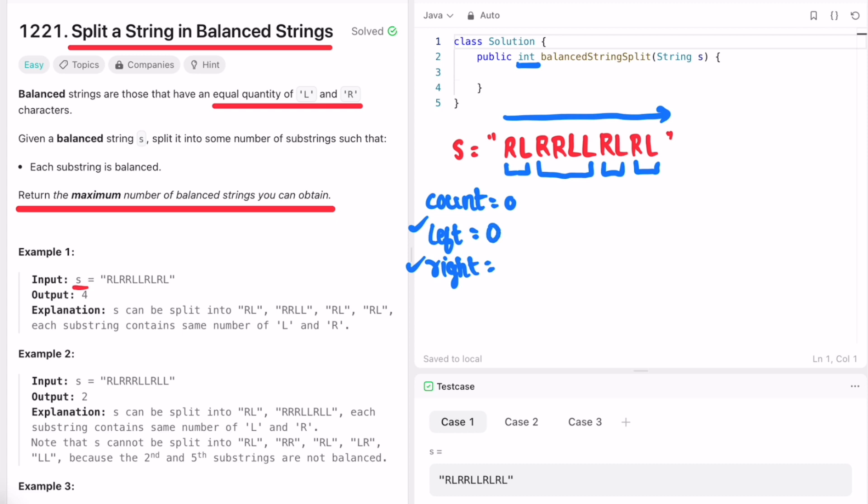So let's start our iteration from here. Keep track, whenever this condition satisfies we increment the count variable. So we are here, R, so increment right. Now we go for the next element, we are here, L, so increment left. This condition is passing because left and right are having equal values, so increment count.